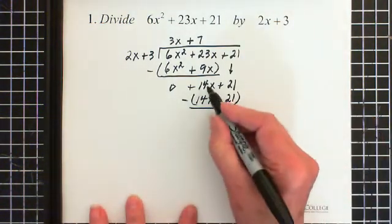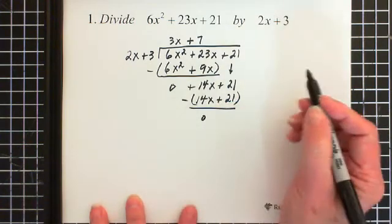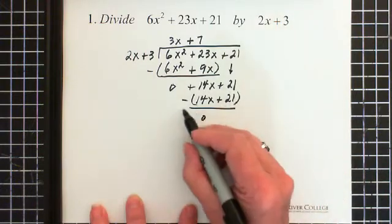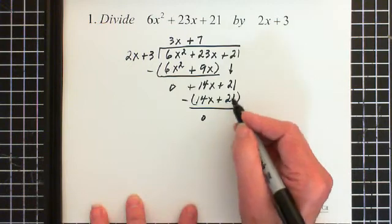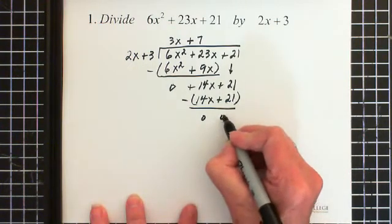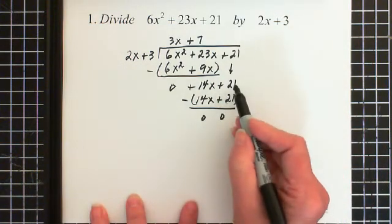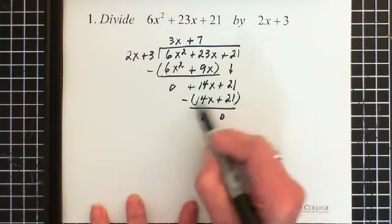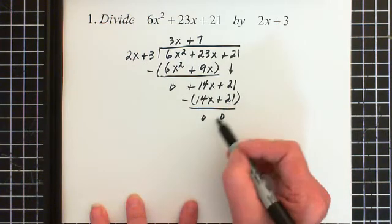So essentially we have 14x minus 14x, which is 0, and 21, and of course we are subtracting this entire thing, so we are subtracting the 21. So this is 21 minus 21, which is 0. Another way of looking at it is that we have 14x plus 21, and we are subtracting the exact same thing.